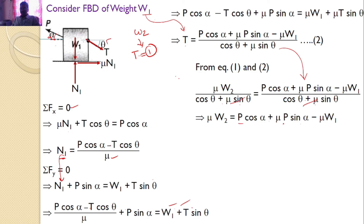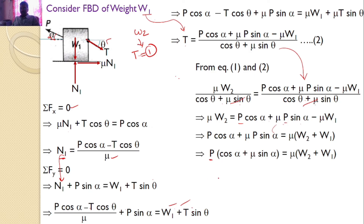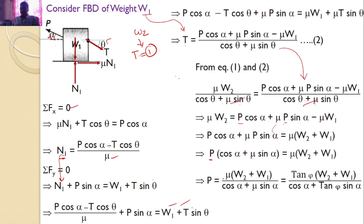From this, rearranging to get an equation for P: P = mu*(W1 + W2) / (cos(alpha) + mu*sin(alpha)). Since mu is the coefficient of friction, let phi be the friction angle, so mu = tan(phi). Substituting: P = tan(phi)*(W1 + W2) / (cos(alpha) + tan(phi)*sin(alpha)).